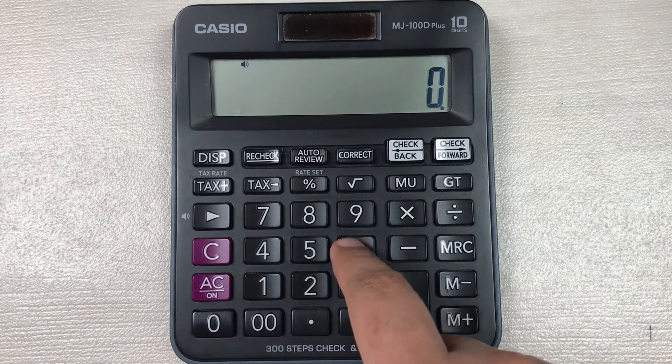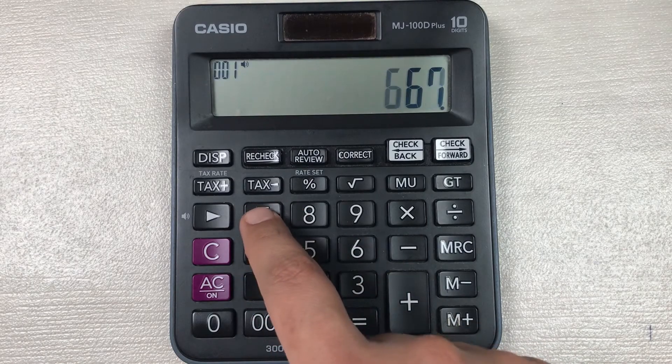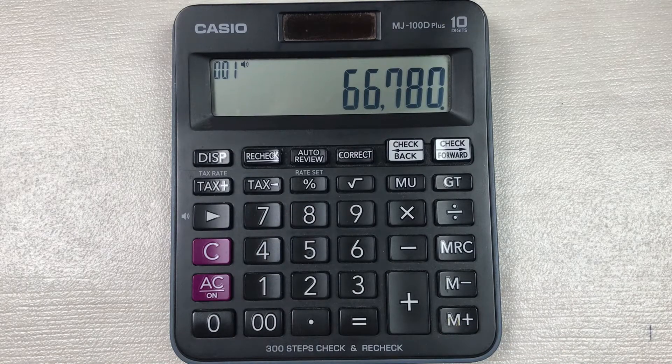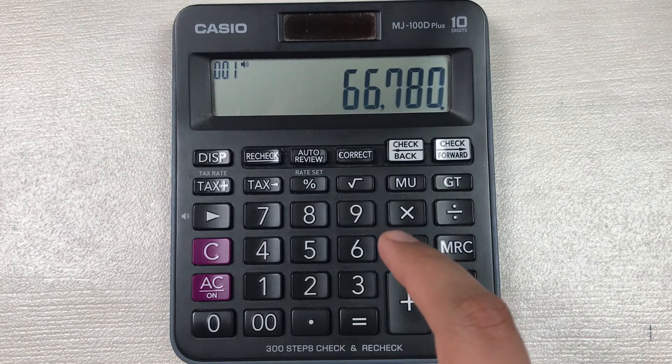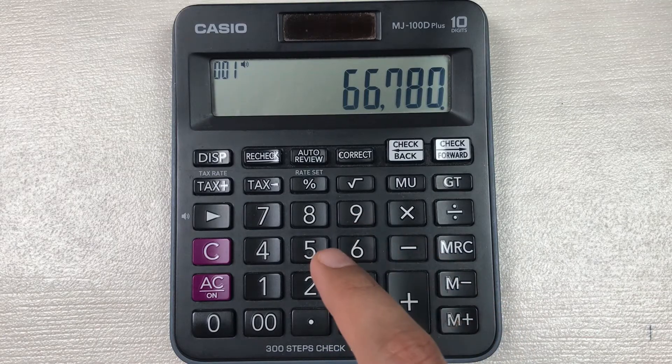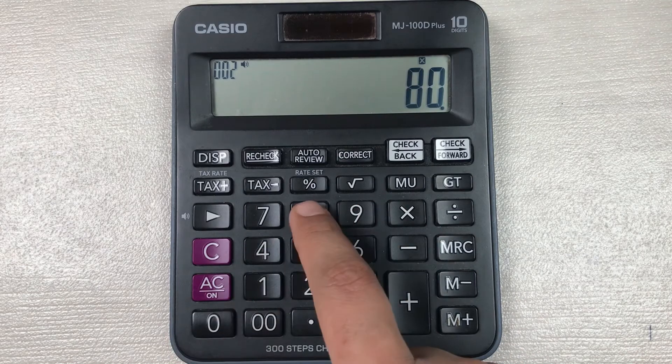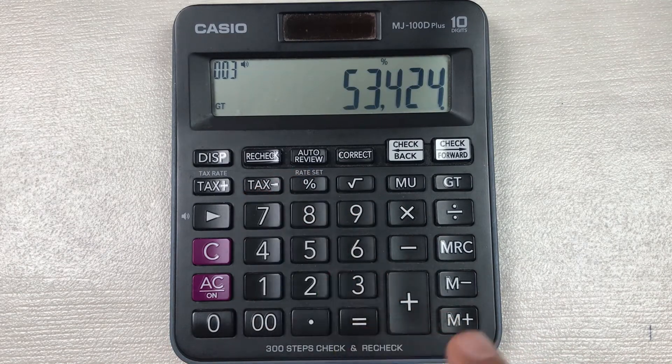Let's say we have an item and the price of that item is 66780 and we want to find out what will be the final price after 80% off. So we have to multiply it with 80, then we press this percentage button and then we press this minus button.